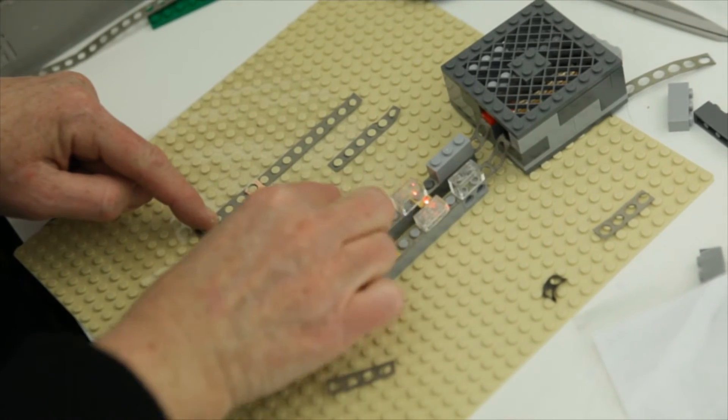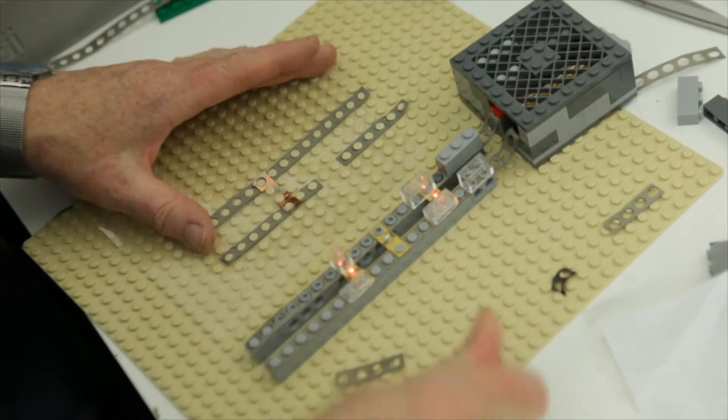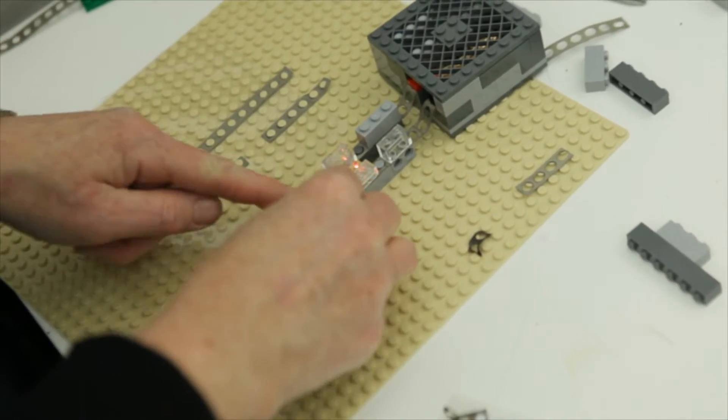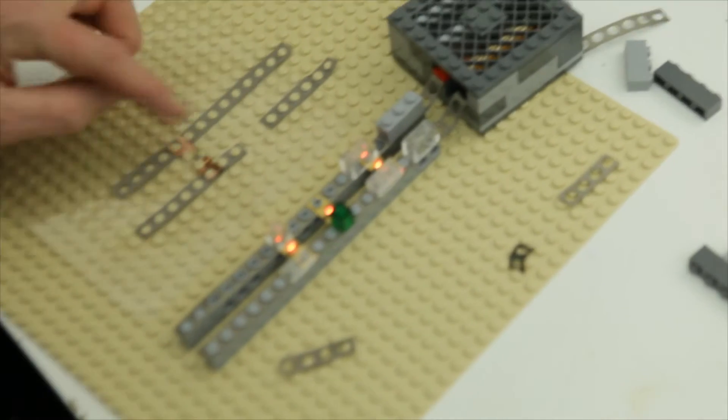But because we put the resistor there, we're going to have like three LEDs on one resistor. And so when we're done, just like over here we have these in a row, we will have this.